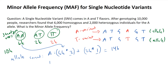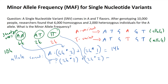For the T variant, we have 2,000 times 1 from the heterozygous individuals, plus 2,000 times 2 from the homozygous TT individuals. Doing the math: 2,000 plus 4,000 equals 6,000 T alleles. We can see that 14,000 plus 6,000 equals 20,000 total alleles, which is a nice way of checking your math to make sure you're not off.